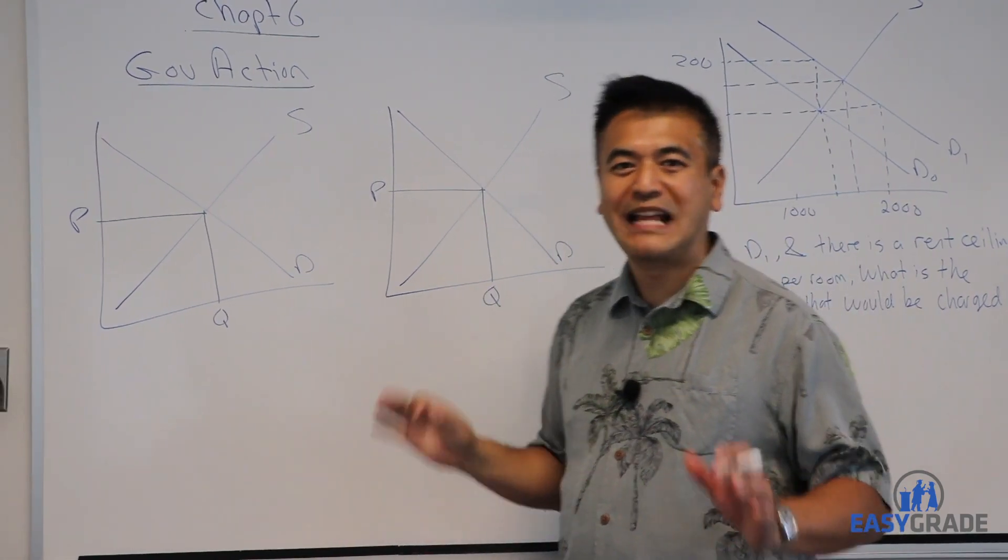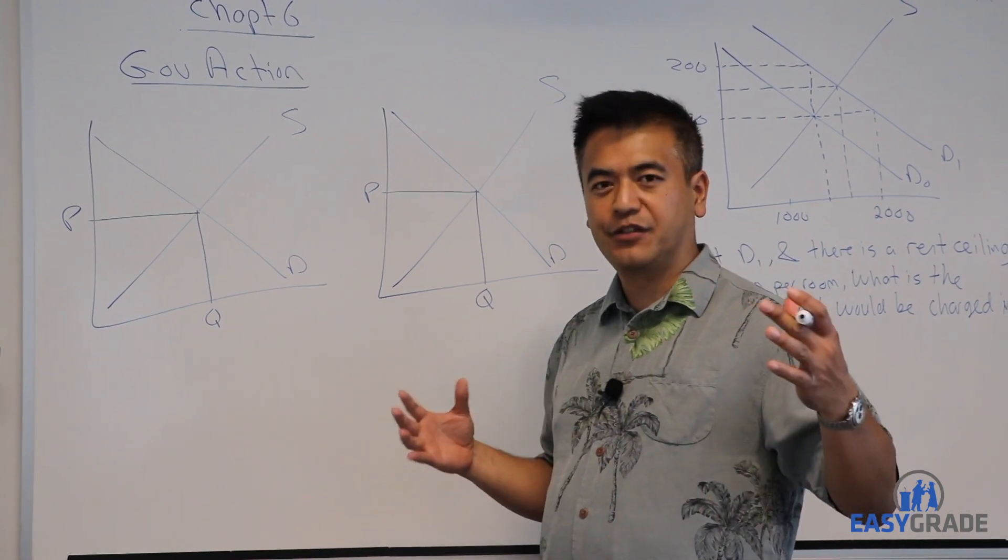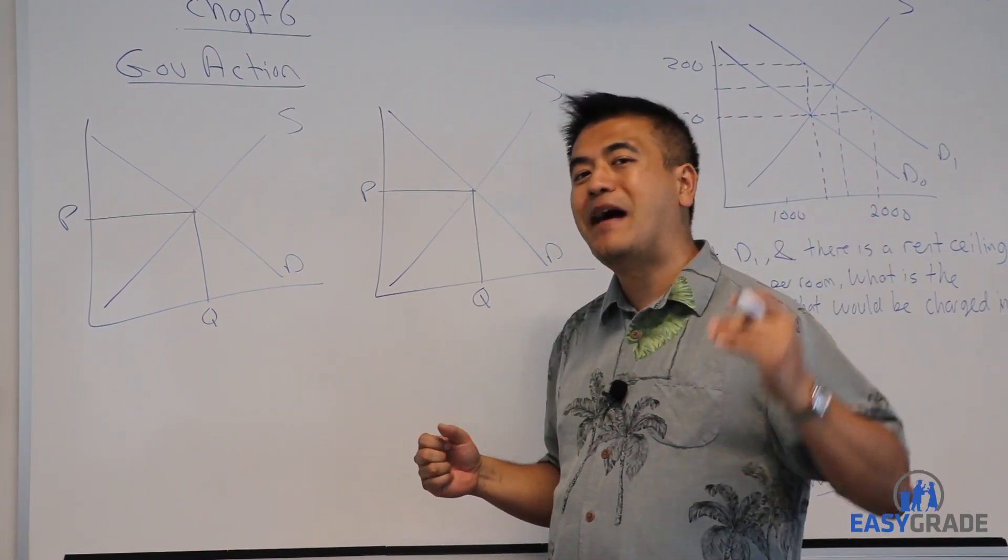Okay, chapter 6, government action. The governments intervene in markets by way of price controls, minimum prices and maximum prices.